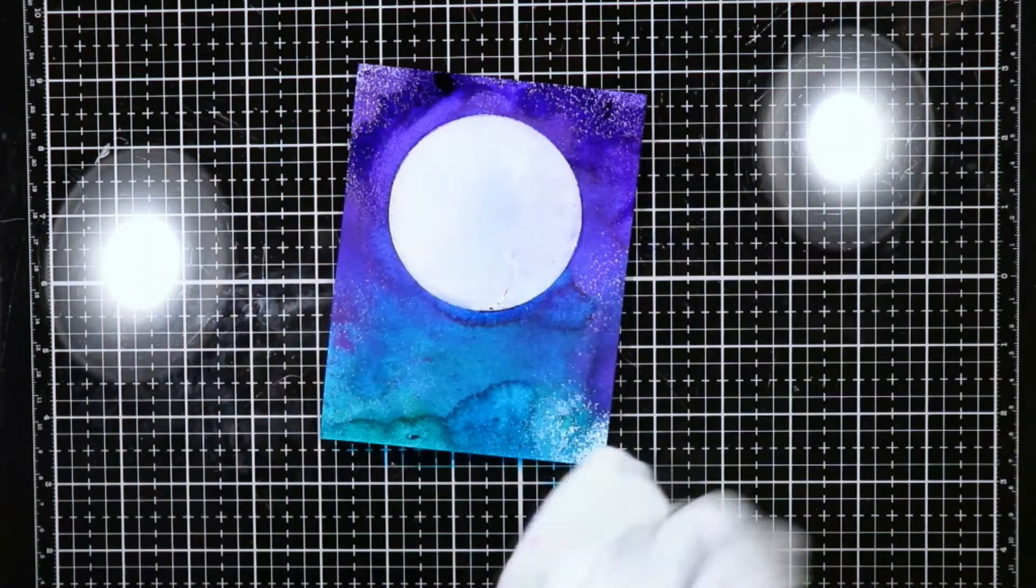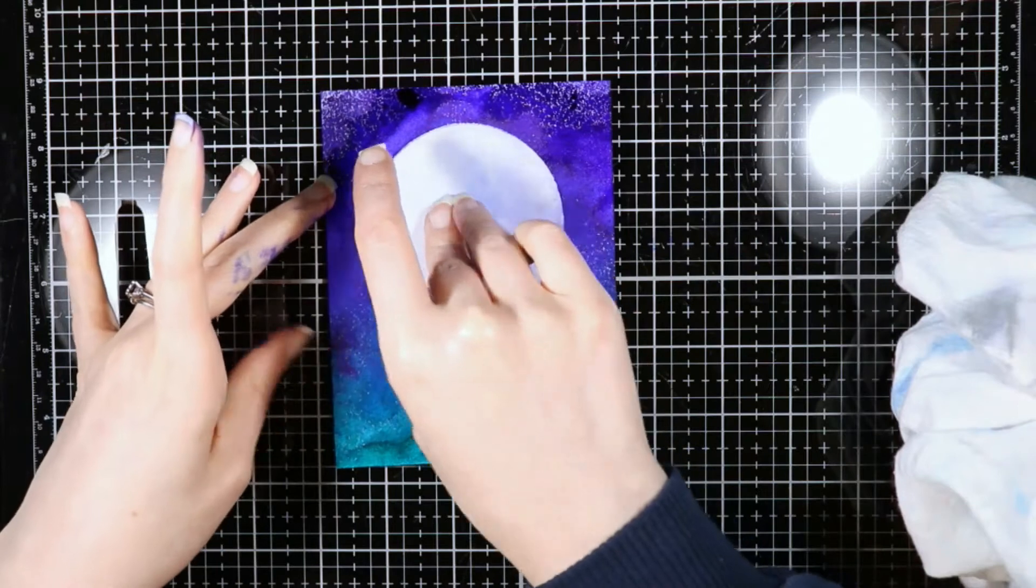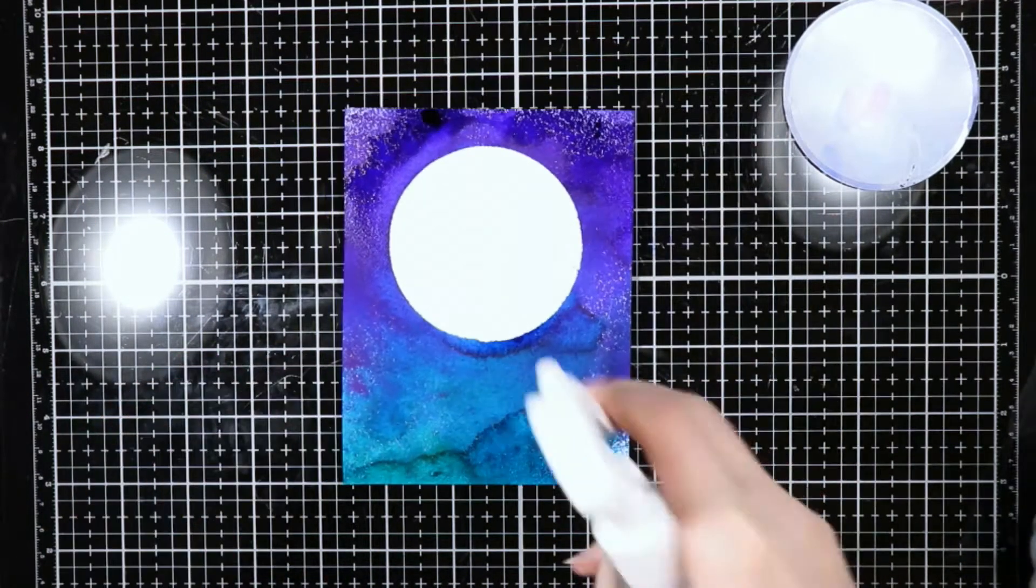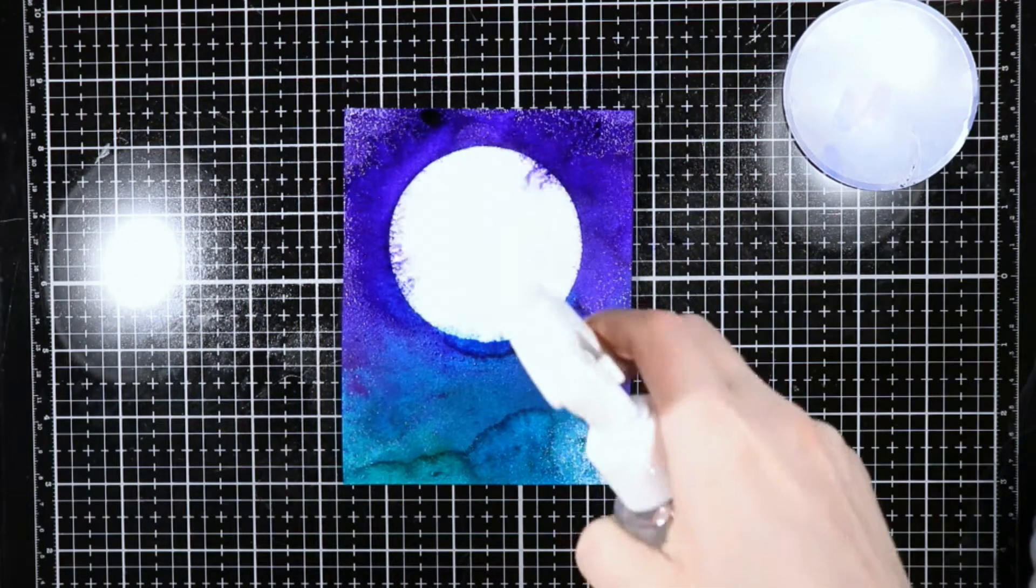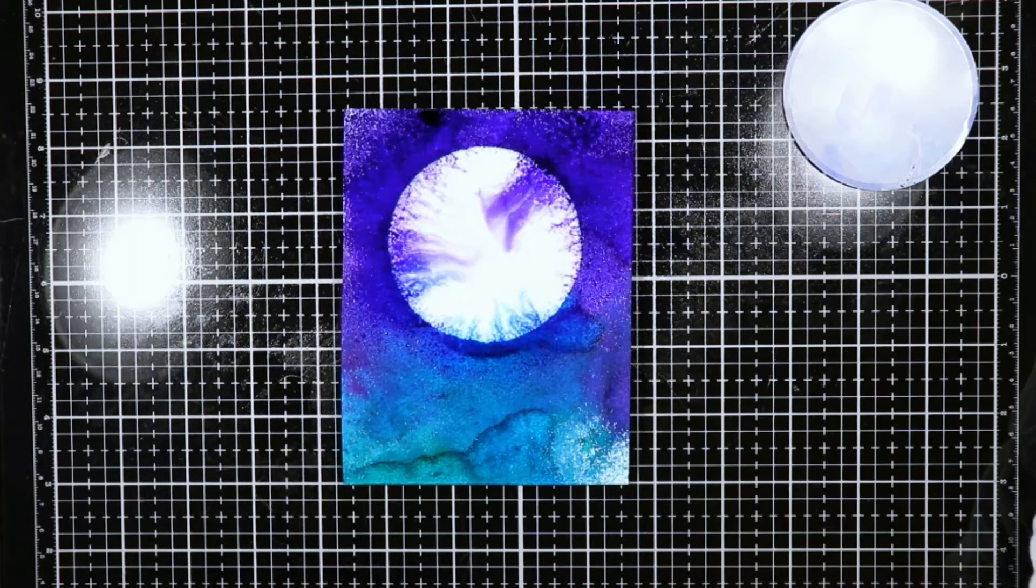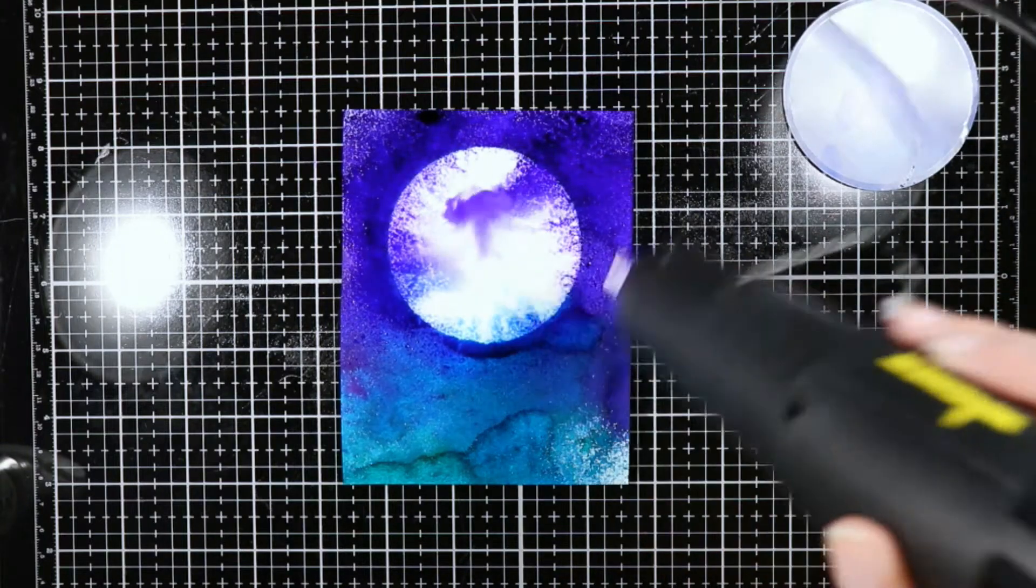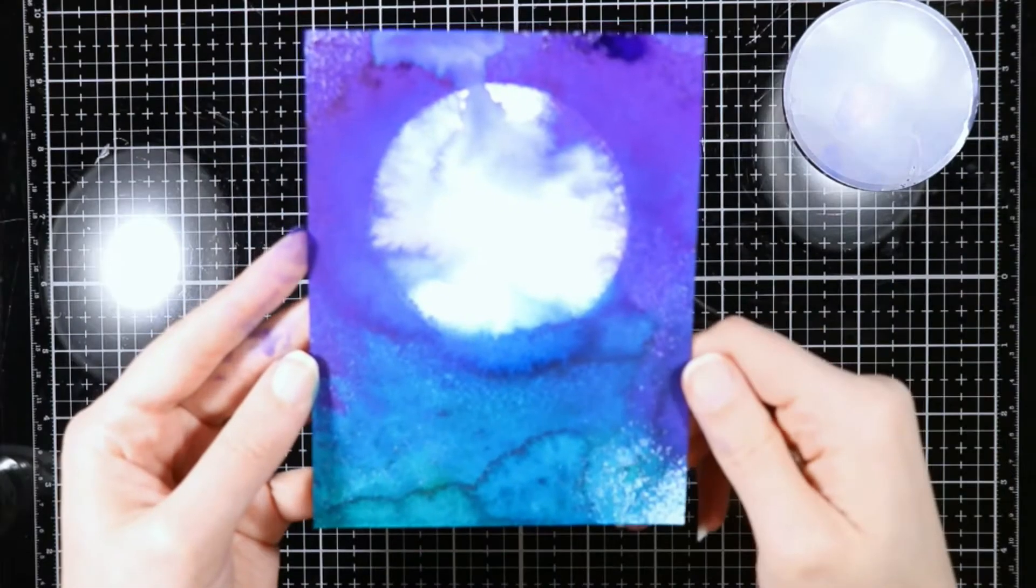It doesn't have to be completely dry, but you want it fairly dry for this. I'm just going to wipe off my plastic mask, and then we're going to spray water in that clean circle area. As you spray the water, the inks are going to move towards the center of that circle and give that kind of hazy moon look. Then I just dried it with my heat tool.